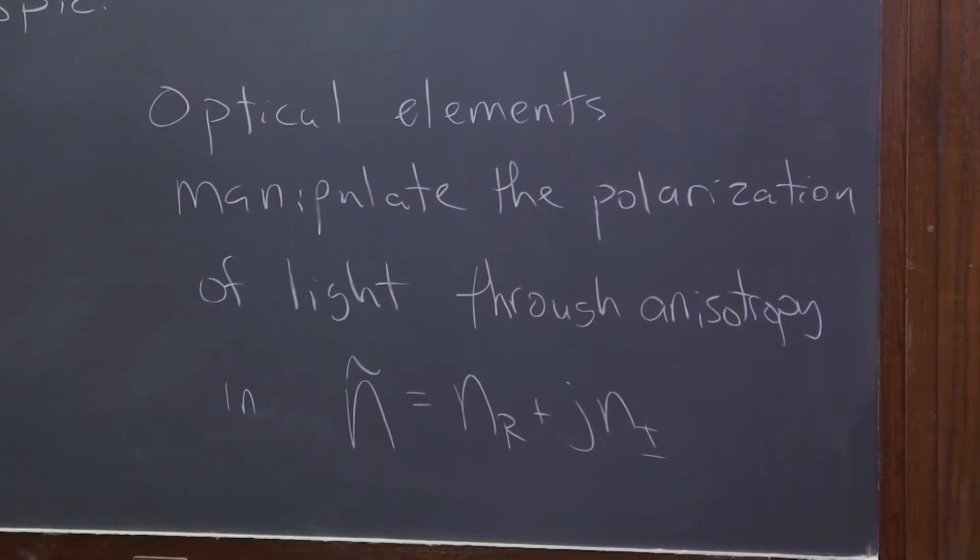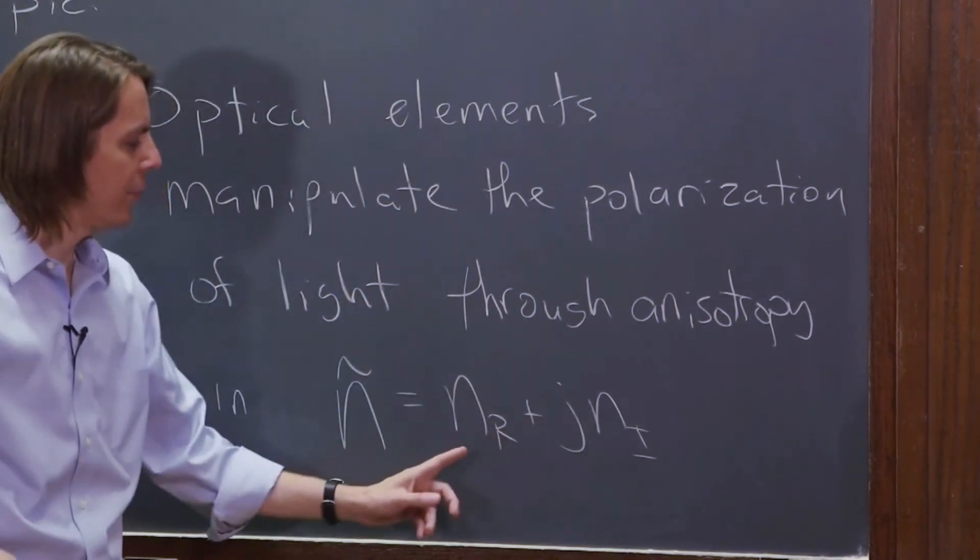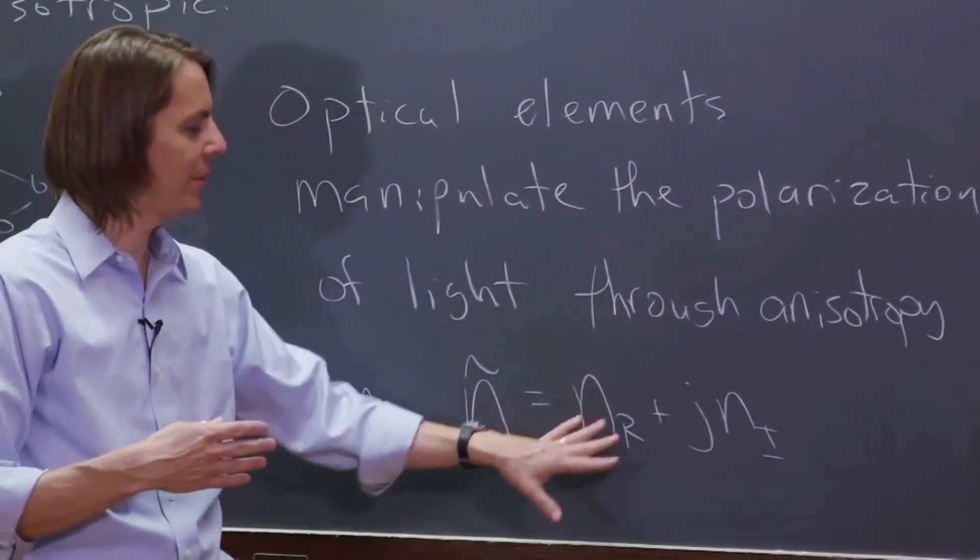We decided that the number, the property of the material that defines how light interacts with it, and we did it for a dielectric, was this number. The real part talked about how much the light slowed down when it got into the material and how much the wavelength changed.